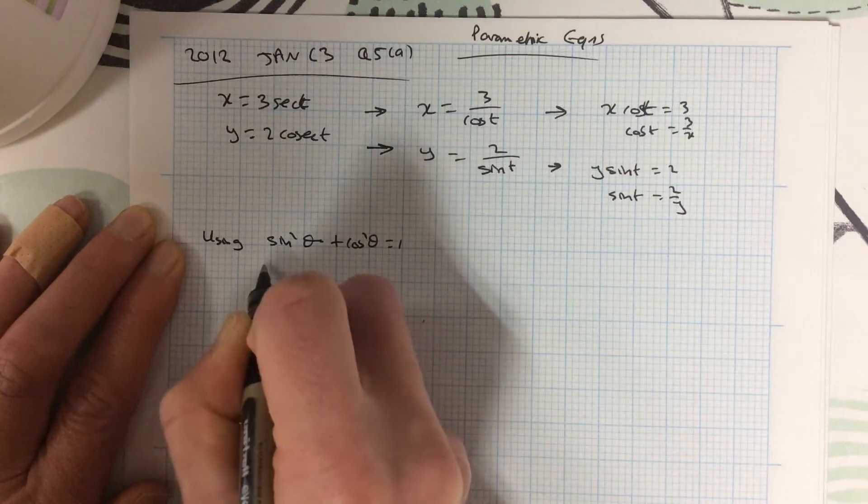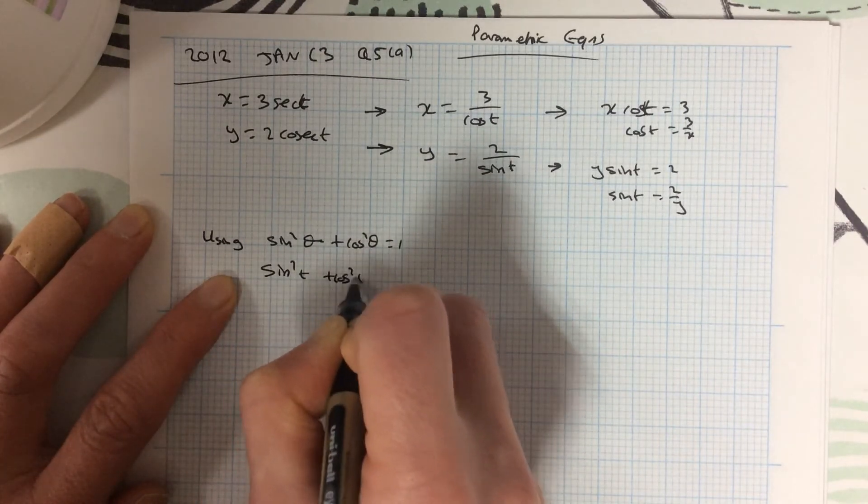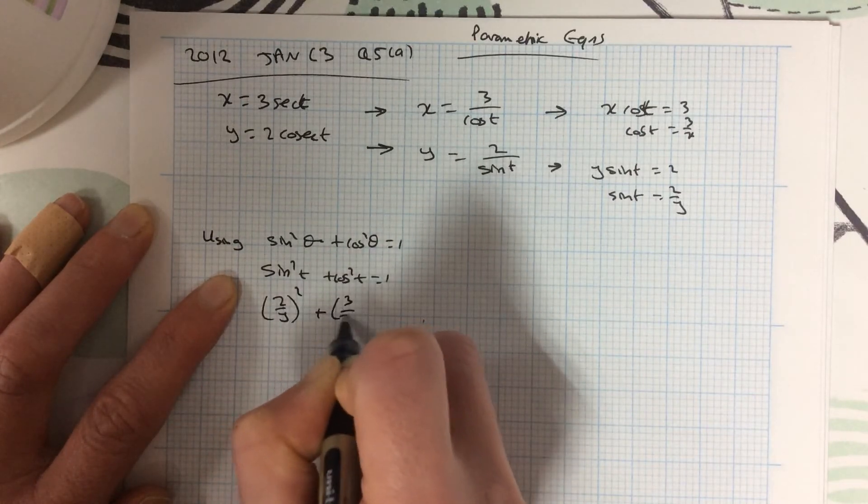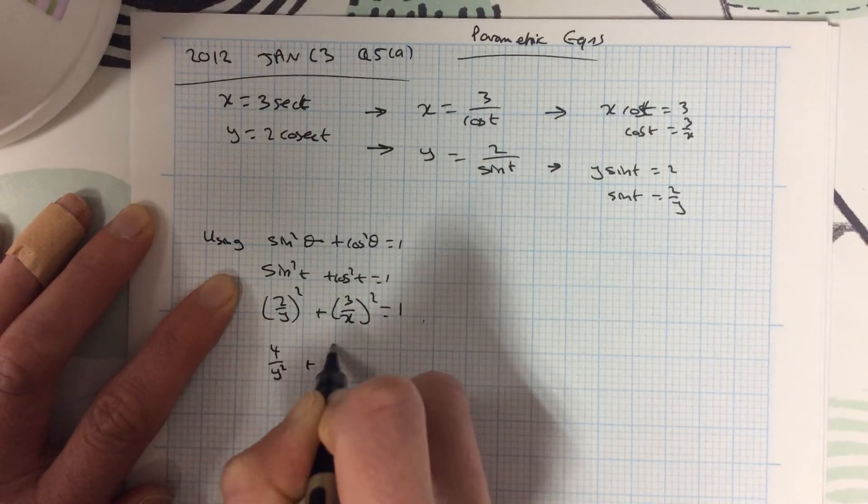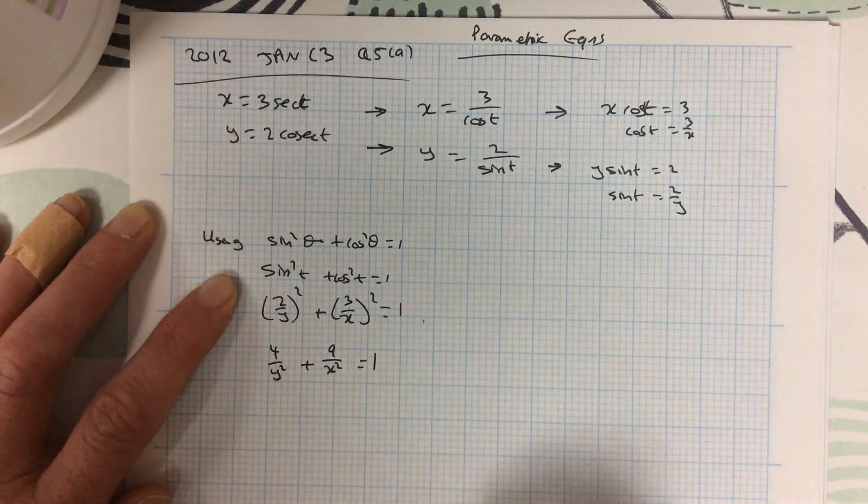So sine, well, I'm really using sine squared t, cos squared t. So sine t equals 2 over y. Cos is 3 over x. So squaring that out. And that's you.